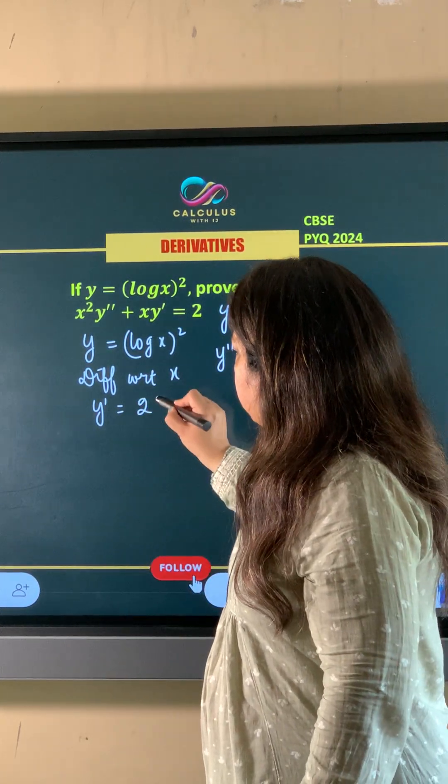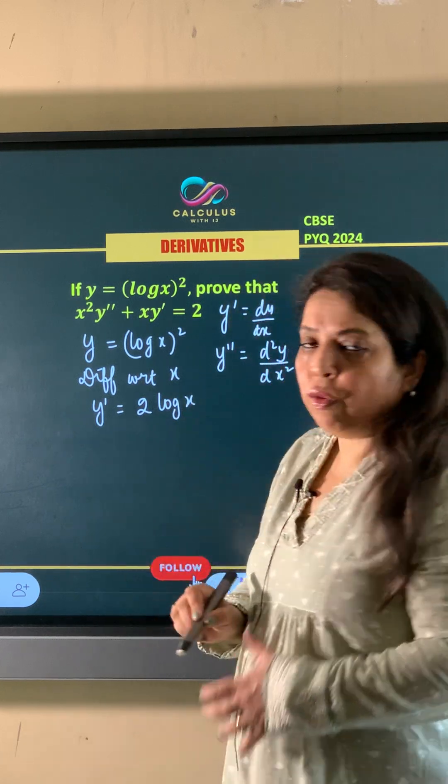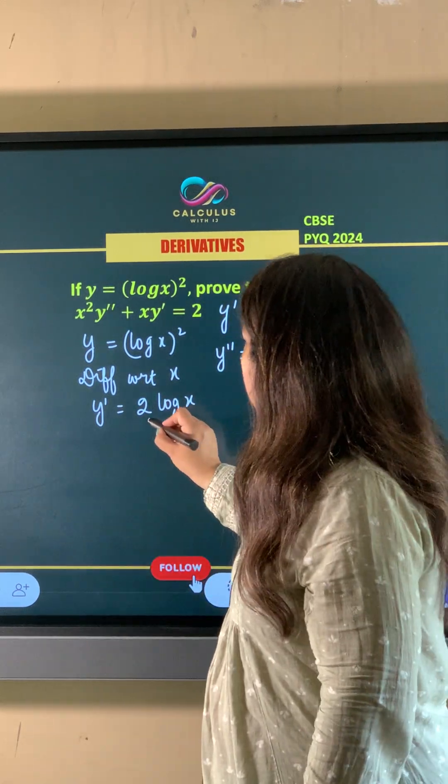To, 2 comes here, to, 2 log X into derivative of log X which is 1 upon X.